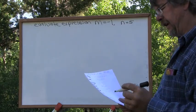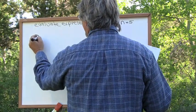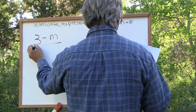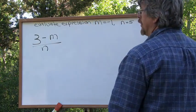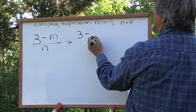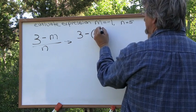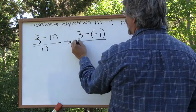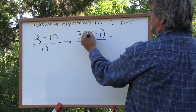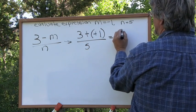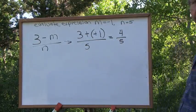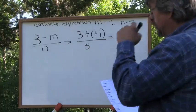What if we have the expression 3 minus m over n? This becomes 3 minus negative 1 — remember, watch your signs — over 5. We negate the negative, so this becomes positive 4 over positive 5: four fifths. Piece of cake.